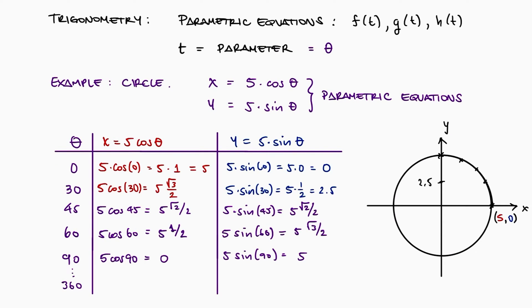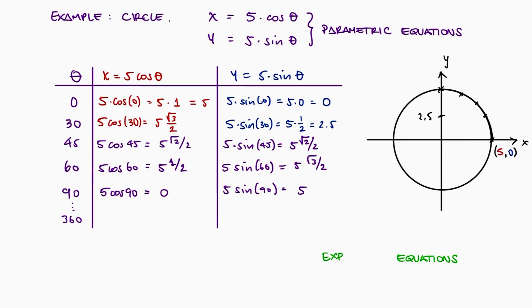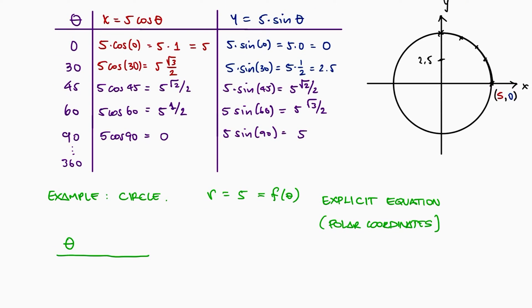Now these parametric equations seem more complex than just using polar coordinates. If we were just using an explicit equation in polar coordinates, all we would do is define r equal to 5. Technically, r is a function of theta, but since theta is nowhere to be seen here, it means that for any angle theta, r is equal to 5. Theta equal to 0, r is 5. Theta equal to 30, r is 5. Theta equal to 180, r is still 5.